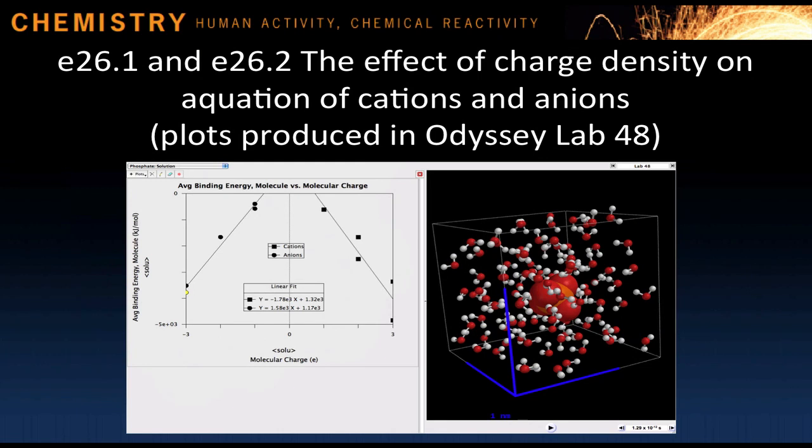Laboratory experiment 48 takes you through the steps for plotting the relationship between the binding energy and magnitude of the ionic charge for a variety of cations and anions. This is an example of where students can discover and plot relationships themselves.